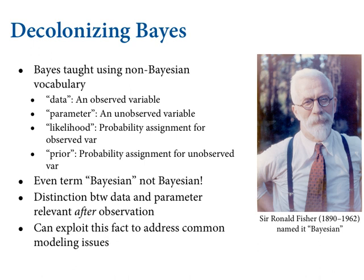Something useful as a conceptual introduction to this material is what I like to jokingly call decolonizing Bayes — decolonizing Bayesian inference. Here's the basic story: Bayesians didn't call Bayesian inference Bayesian. This is a term due to Ronald Fisher, who was an opponent of Bayesian inference. And usually when we teach Bayes, we use non-Bayesian terminology. Why? Because in the early 20th century especially, Bayesians were in the minority, and people like Fisher worked really hard to exterminate Bayes.